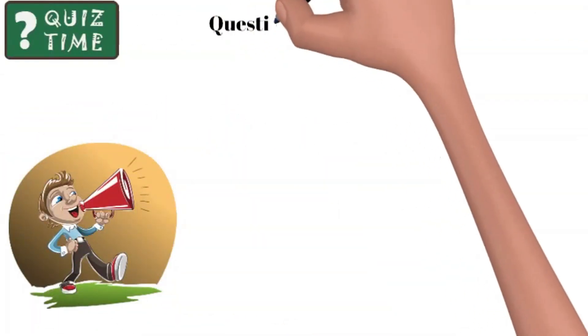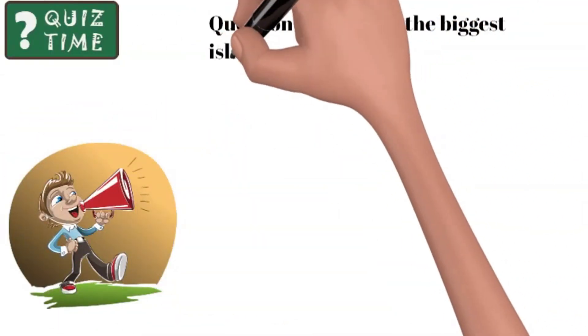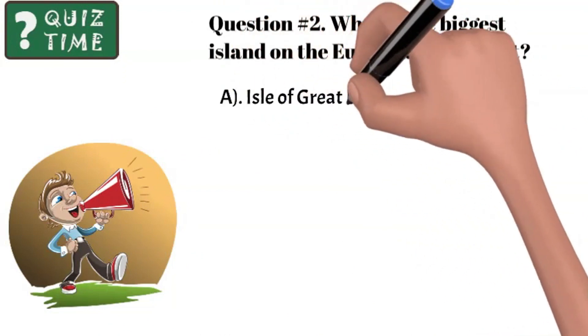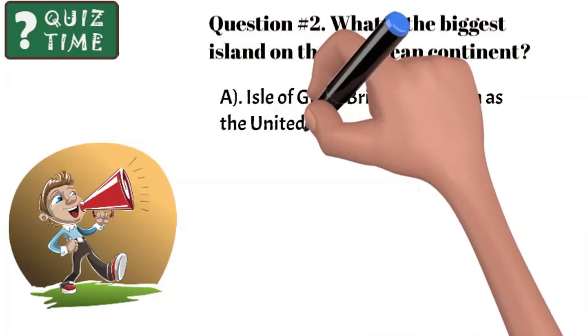Question number two: What is the biggest island on the European continent? Is it A, Isle of Great Britain also known as the United Kingdom?